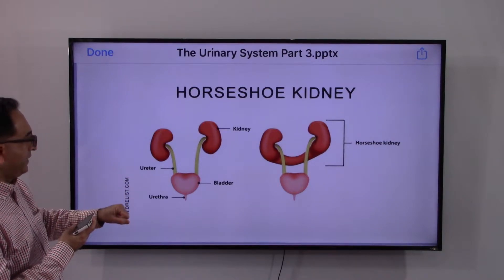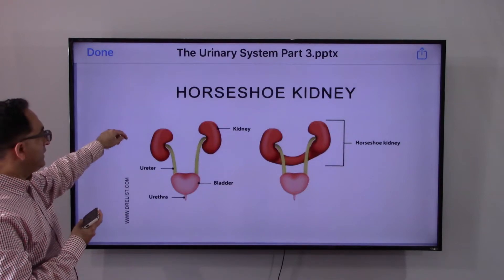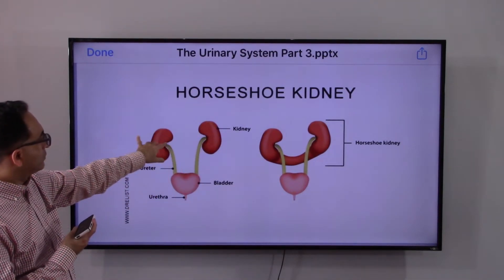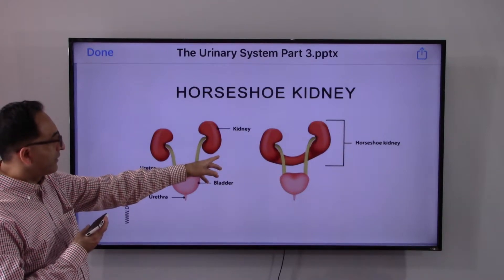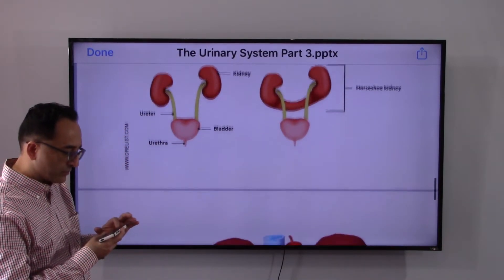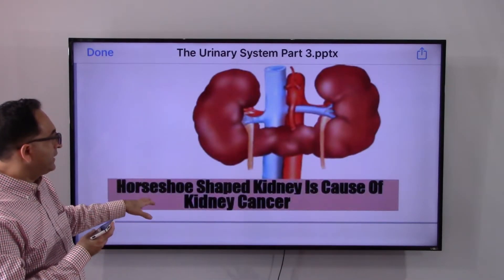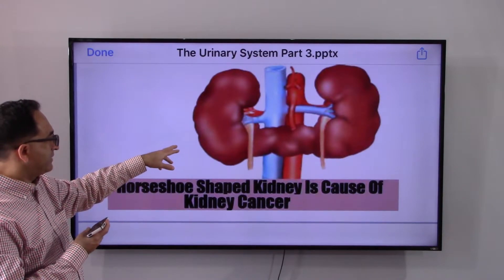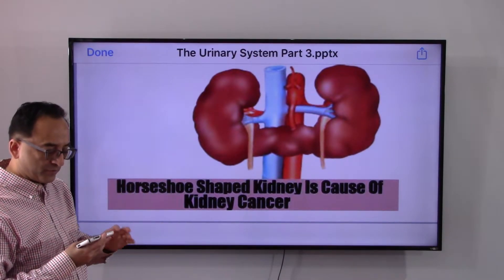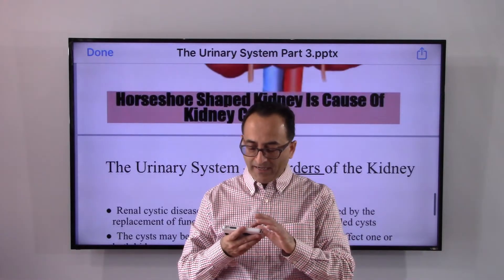The horseshoe kidney slide shows two kidneys — along with the ureter, bladder, and urethra — fused into the shape of a horseshoe, which is why the name horseshoe kidney is given. In this particular slide example, the horseshoe kidney is shown as a cause of kidney cancer, though whether that occurs depends on the individual case.